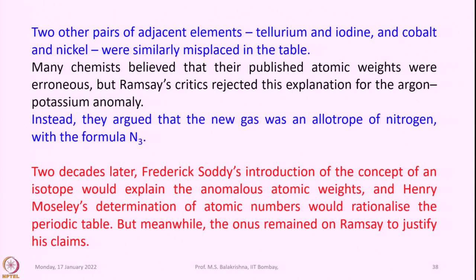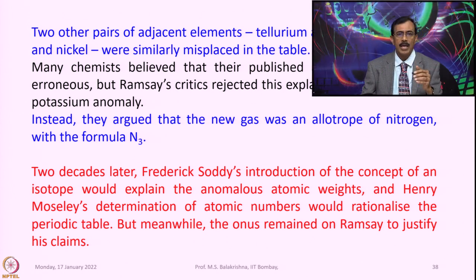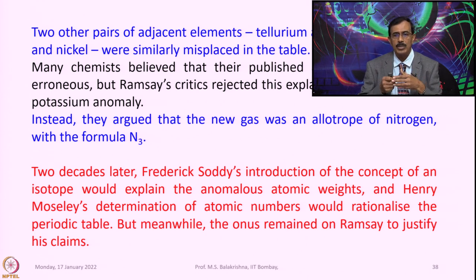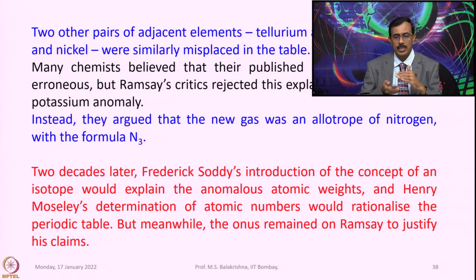Many chemists believed that their published atomic weights were erroneous. But Ramsey's critics rejected this explanation for the Argon-potassium anomaly — instead they argued that the new gas was an allotrope of nitrogen with the formula N3. Two decades later, Frederick Soddy's introduction of the concept of an isotope would explain the anomalous atomic weights, and Henry Moseley's determination of atomic numbers would naturalize the periodic table. But meanwhile, the onus remained on Ramsey to justify his claims.